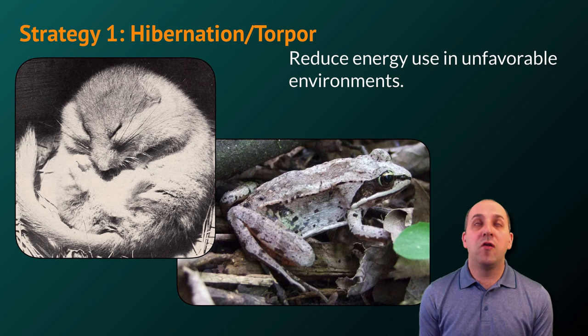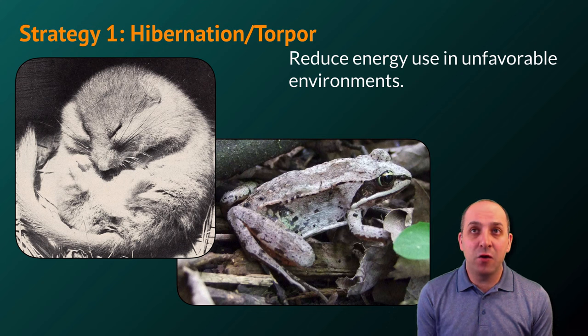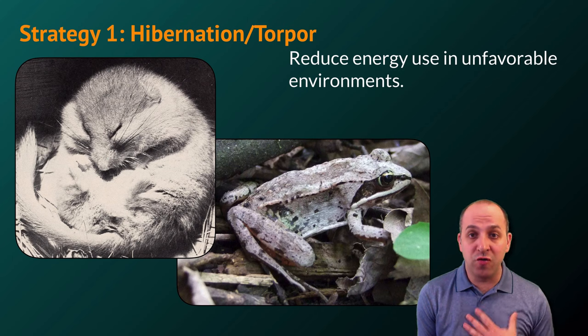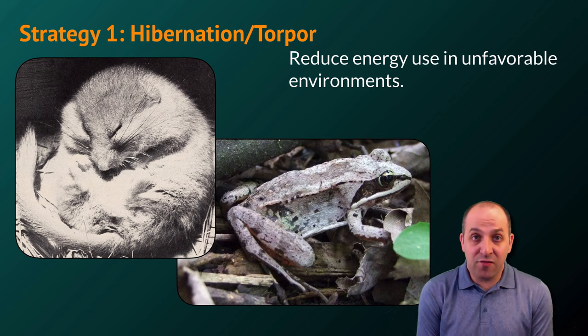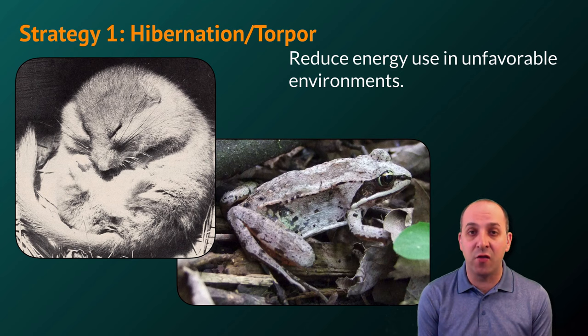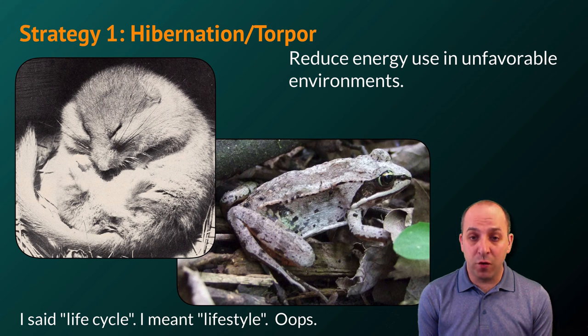The temperatures of the external environment are so cold that they would have tremendous difficulty acquiring the amount of energy that they need in order to remain within their tolerable range of internal temperatures. By reducing their energy use during these times of year, the mammal can survive those unfavorable conditions and can resume its normal energetic life cycle once more favorable conditions return.